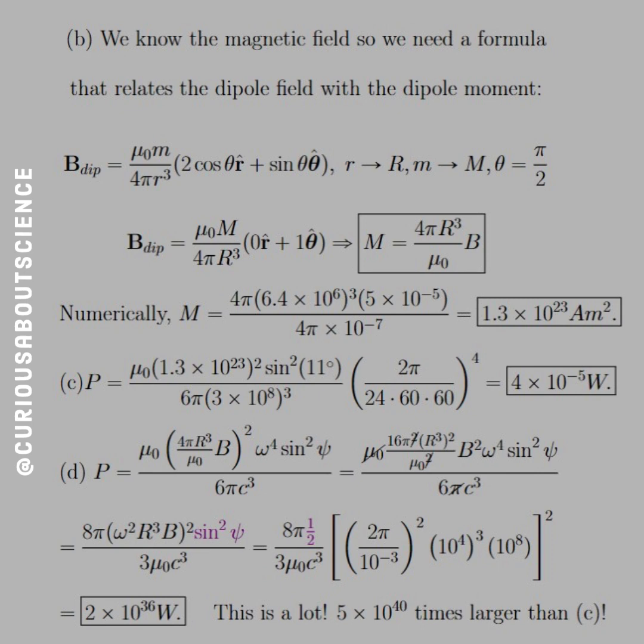So we know that B dipole, with respect to the dipole moment, is mu naught m over 4 pi r cubed, 2 cosine theta r hat plus sine theta theta hat. Here, r goes to big R, little m goes to big M, and theta goes to pi over 2, since we're at the equator, so the polar axis is at 90 degrees.